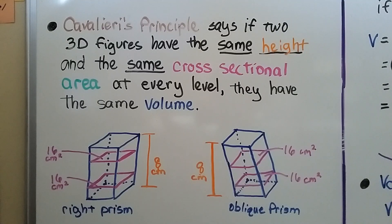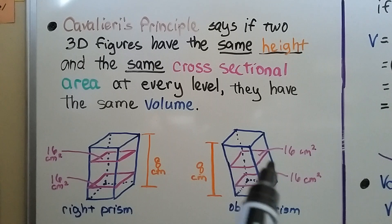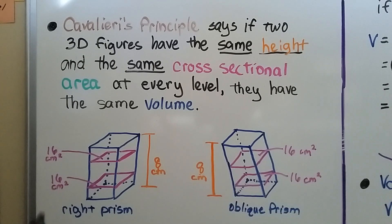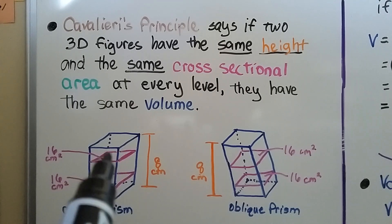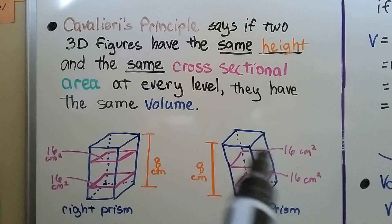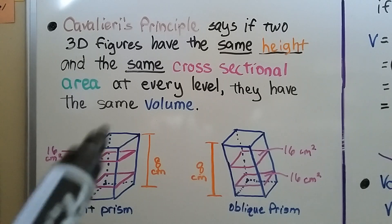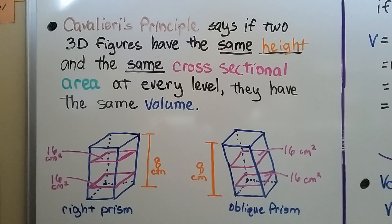Cavalieri's Principle says if two 3D figures have the same height and the same cross-sectional area at every level, they have the same volume. Whether it's a right prism or an oblique prism, if it has the same height — like these, where both have a 16 centimeter square cross-section — they're going to have the same volume.